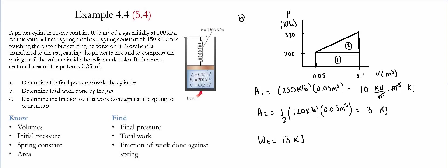Notice that the two areas represent different components of work. Area 1 is the work done against the piston and the atmosphere. Area 2 is the work done against the spring. For Part C, we need the fraction of work done against the spring, which is equivalent to Area 2, equal to 3 kilojoules.